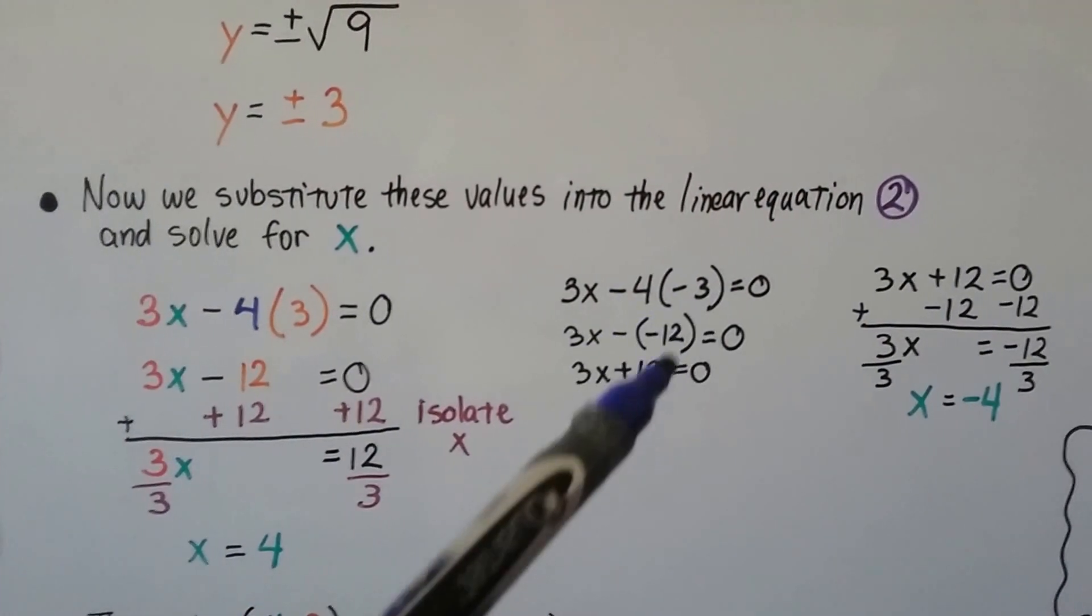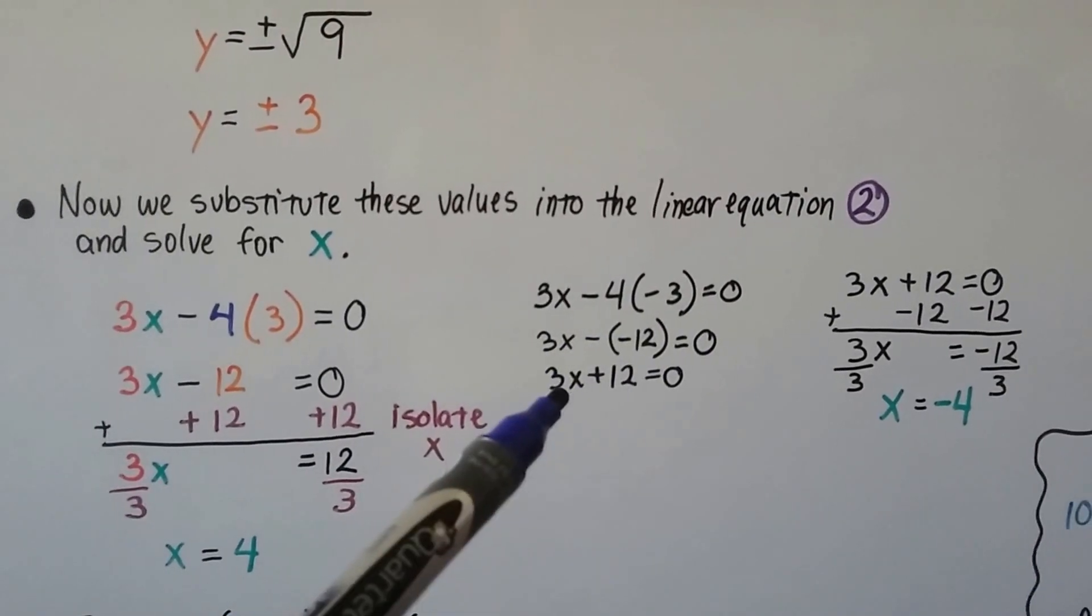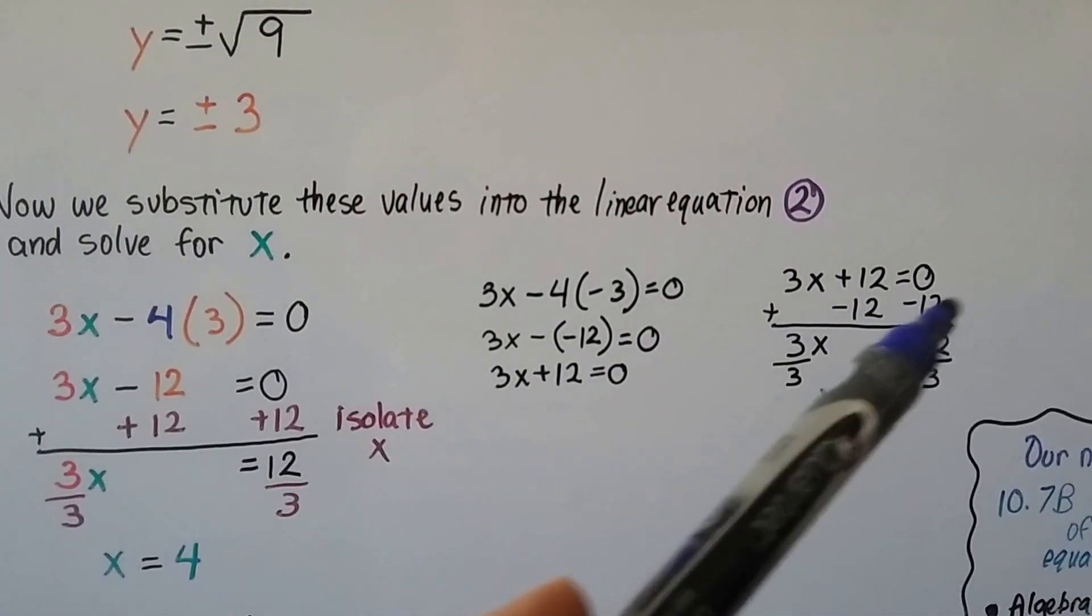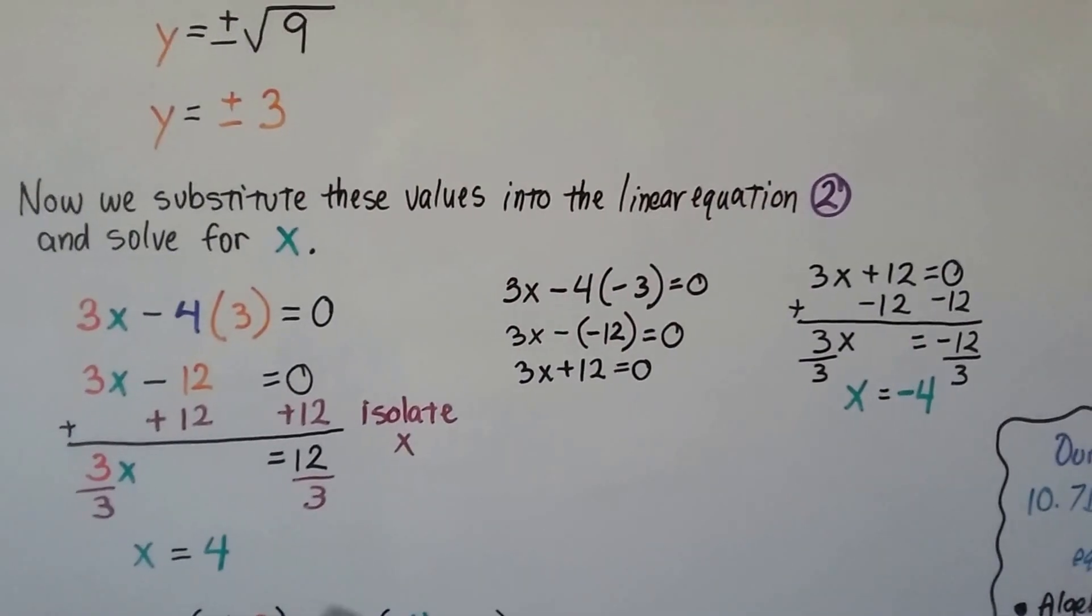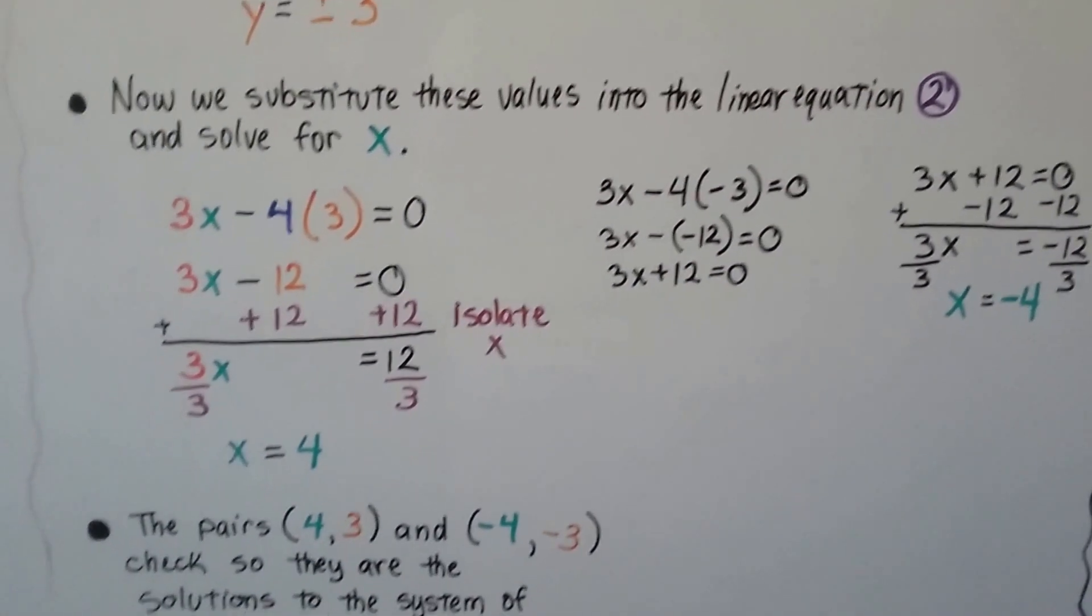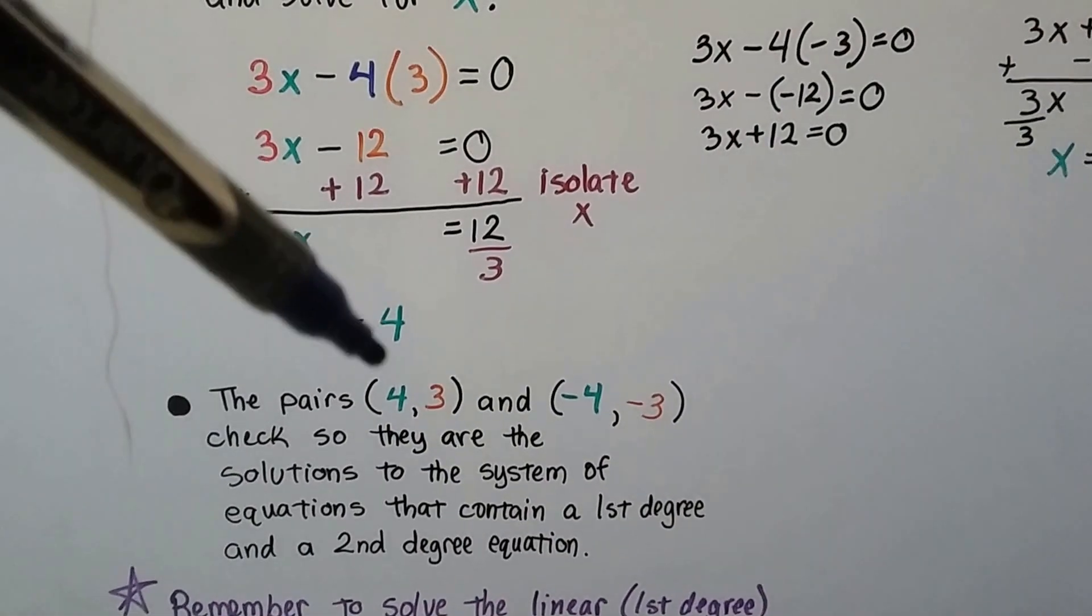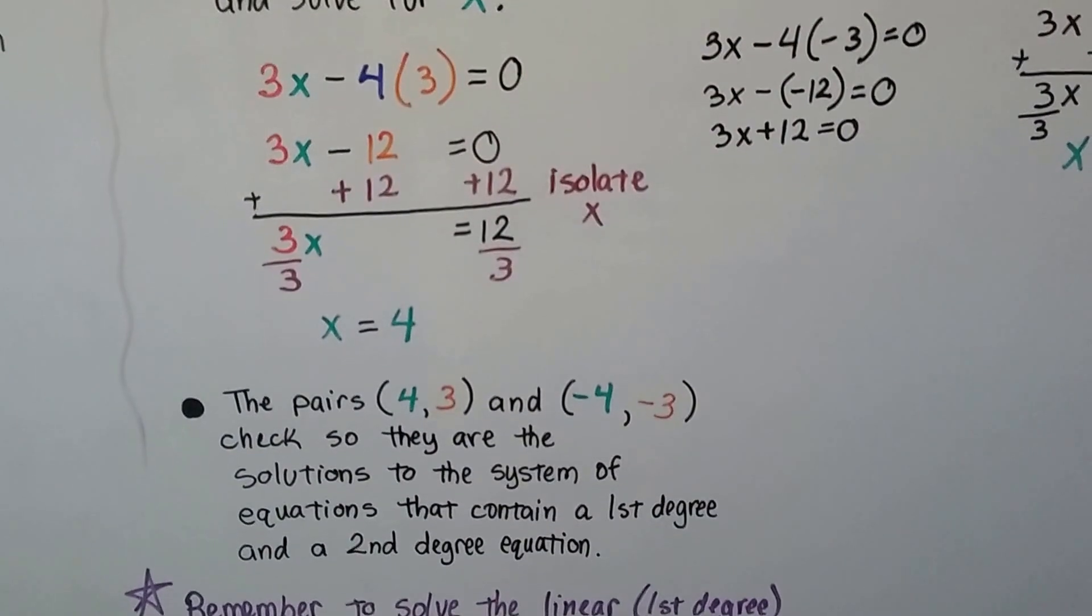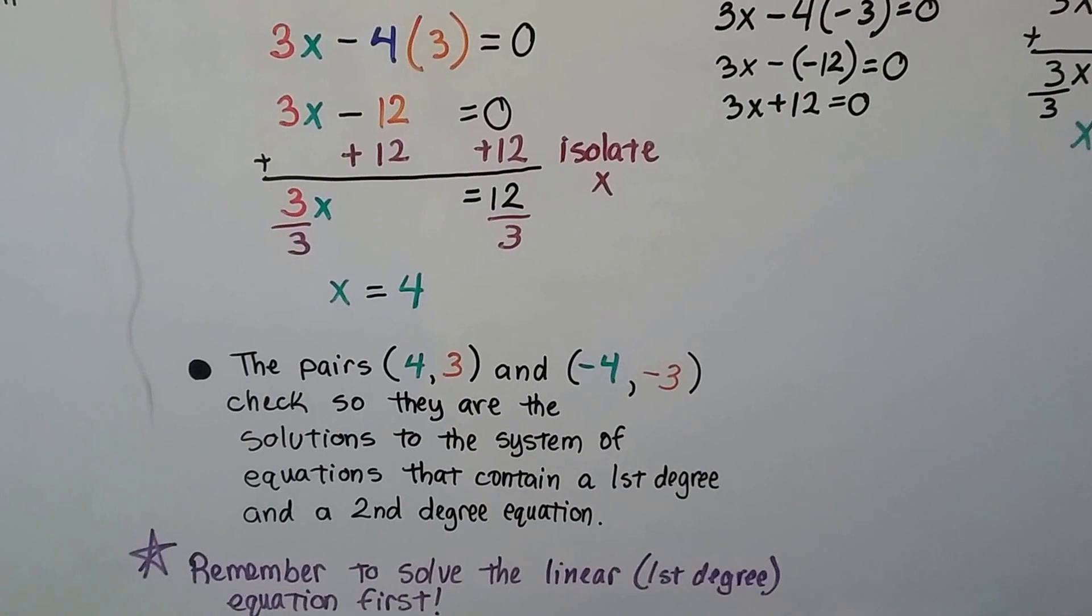If it's a negative 3, then we get 3x minus a negative 12. So we add the opposite, 3x + 12. When we subtract 12 from each side of the equation to isolate x, we get x = -4. So the pairs (4, 3) and (-4, -3) check. These are solutions to the system of equations that contain a first degree and second degree equation.